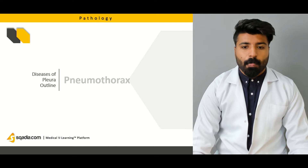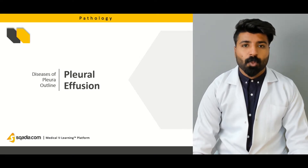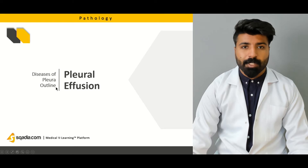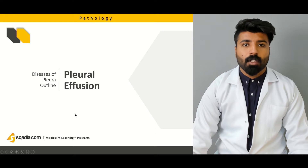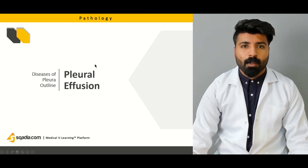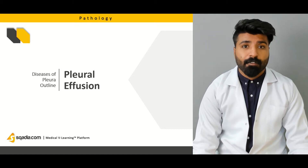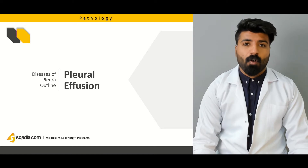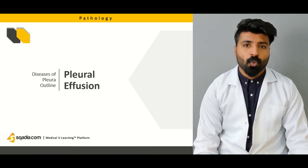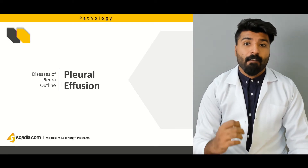Afterwards, we're going to talk about Pleural Effusion — what the word Pleural Effusion actually means. What kind of fluids are accumulated inside the pleural space: whether it's water, whether it's pus, whether it's blood, whether it's some kind of fatty fluid. When all of these things combine together, how do they affect the lungs and the effectiveness of the lungs?